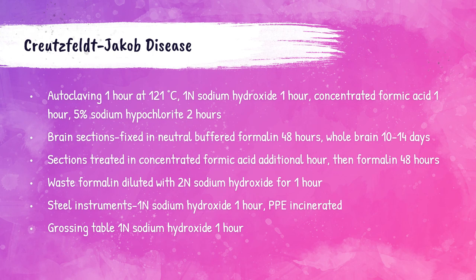Methods that can kill CJD prions include: autoclaving at 121°C for one hour, 1 normal sodium hydroxide for one hour, or concentrated formic acid for one hour, and 5% sodium hypochlorite for two hours. Brain sections need to be fixed in neutral buffered formalin for a minimum of 48 hours; whole brain specimens need to be fixed for a minimum of 10 to 14 days. Brain sections then need treatment in concentrated formic acid for an additional 48 hours, then formalin for 48 hours. Formalin used for these procedures must be diluted with 2 normal sodium hydroxide for one hour before being discarded.